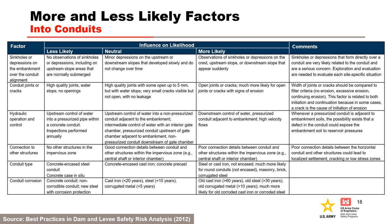This table from the best practices manual can be used to help assess the likelihood of open defects in conduits. It can be used as a starting point, but the risk team must develop project-specific more likely and less likely factors to guide subjective probability estimation. The factors in this portion of the table address sinkholes or depressions in the embankment over the conduit alignment, conduit joints or cracks, hydraulic operation and control, connections to other structures, conduit type, and conduit corrosion.